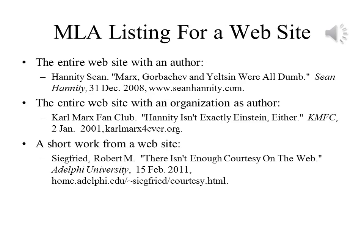For a website, we list the author or authors as before, and the title of the webpage. We then list the publisher of the website and the date when it was accessed, and we list the URL, also known as the web address. You can see examples here for a website with an author who is a person or who is an organization, as well as for a short work that appears on a website.